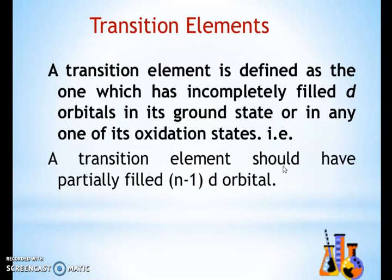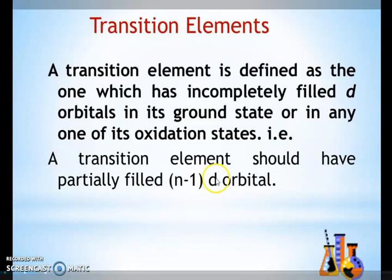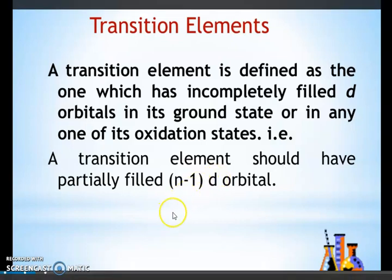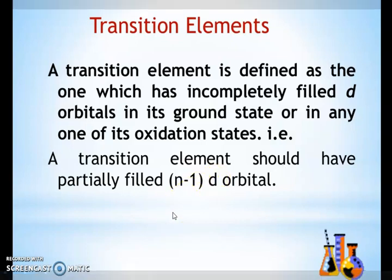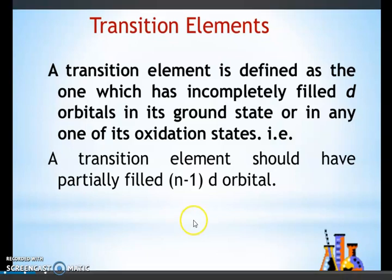For example, Scandium has 3D1 in its ground state. Or any element such as Fe²⁺, Fe³⁺, Zn²⁺ — if in the ionic form the d-orbital has electrons that are incompletely filled, then that is also called a transition element.